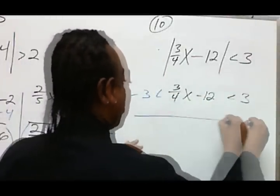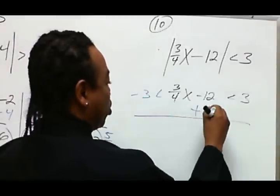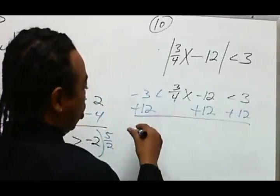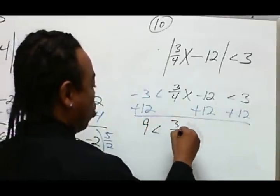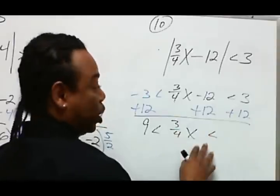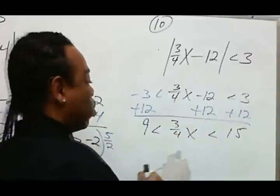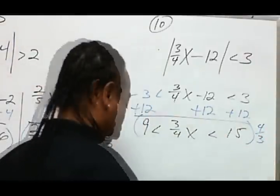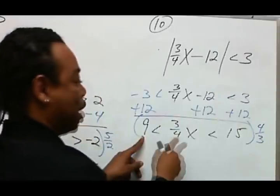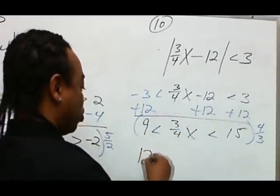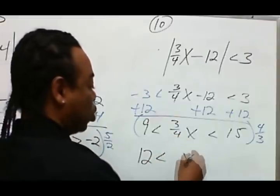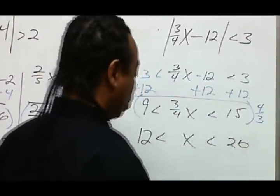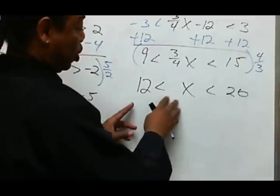We solve everything from within. Let's add 12 here, here, and there. As a result, we're going to get 9 less than or equal to 3/4x less than 15. Now we're going to multiply everything by the reciprocal of 3/4, which will be 4/3. 9 divided by 3 is 3, times 4 is 12. The reciprocal cancels and we get x. And 15 divided by 3 is 5, times 4 is 20.